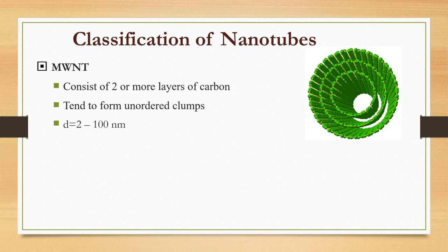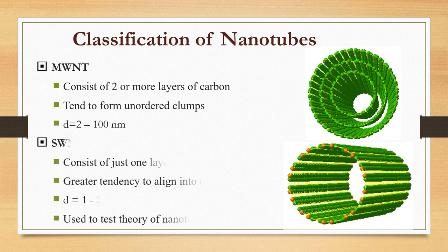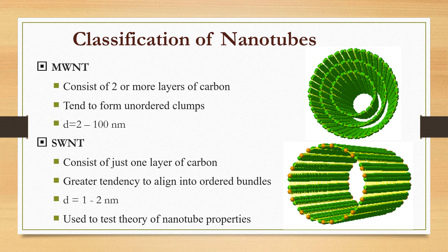Let us look at the classification of nanotubes. The first is multi-walled nanotube, which consists of two or more layers of carbon and tends to form unordered clumps, having a diameter of 2 to 100 nanometers.